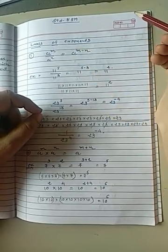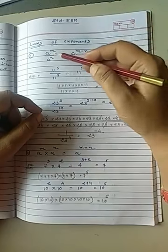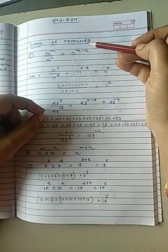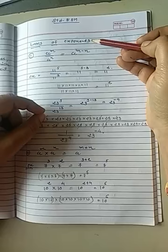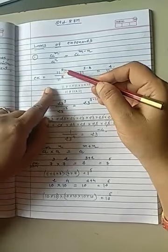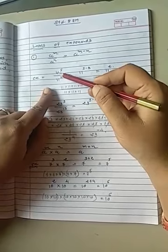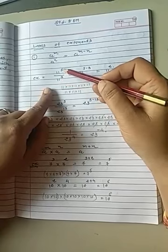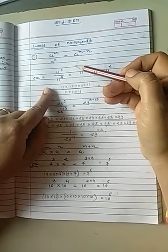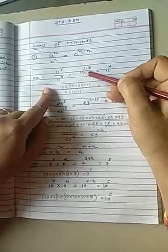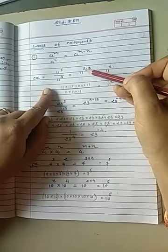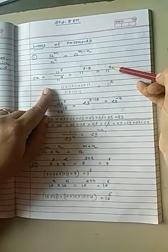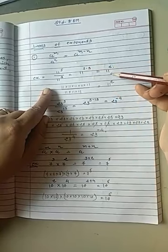If base is same then you will write base one more time. So for example, 11 raise to 5 upon 11 raise to 3, write down 11 and subtraction of powers, 5 minus 3 will give us 2. So answer is 11 raise to 2.